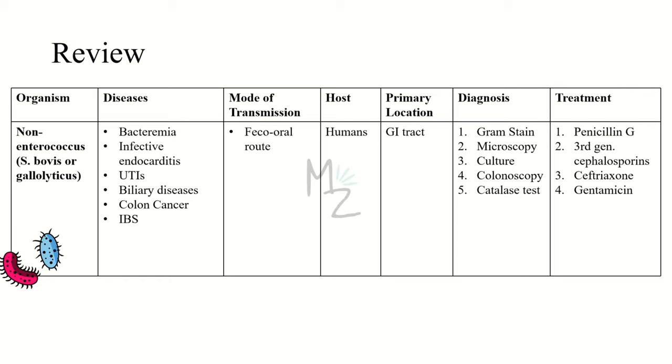Humans are the hosts and the primary location is GI tract. Diagnosis is based on gram staining, microscopy, culture, colonoscopy, and catalase test. Infections caused by non-enterococcus are treated with penicillin G, third gen cephalosporin, ceftriaxone, and gentamicin. And that's it.